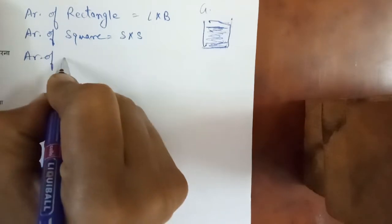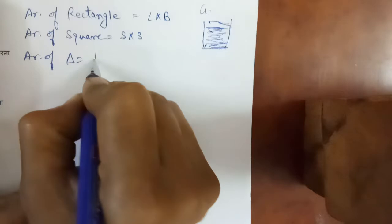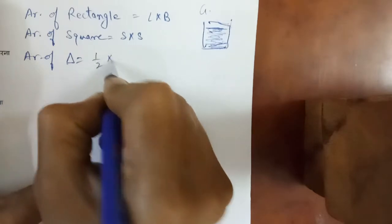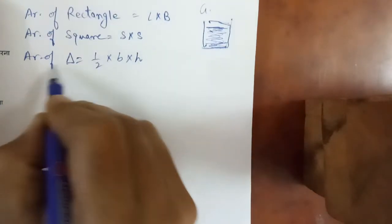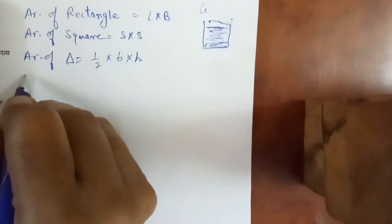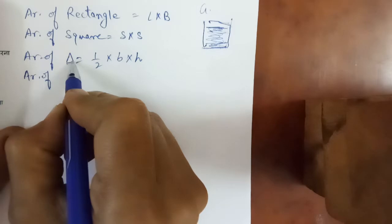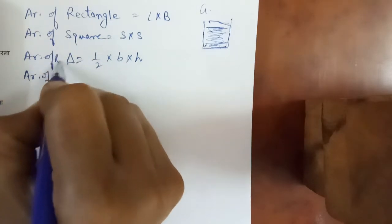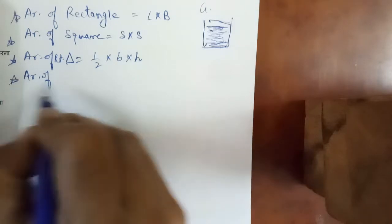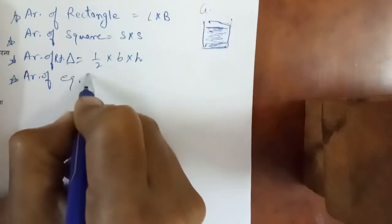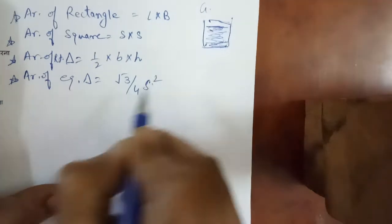आगे आता है area of triangle. यह formula है — आप सारे note कर लेना है copy पे so that you can understand this unit well. Half of base into height is the formula of a right triangle. And if the triangle is equilateral, then the formula is root 3 by 4 into side square.